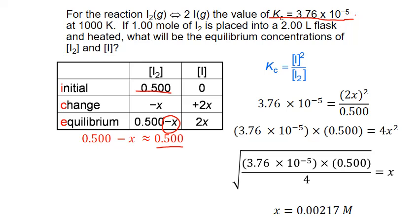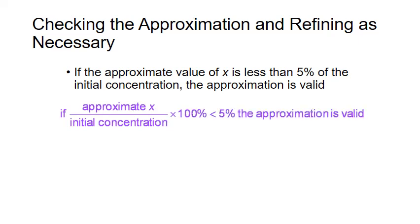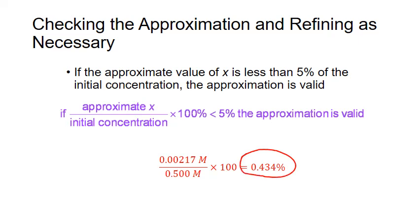When using this approximation, we must verify it was valid. The value of X must be less than 5% of the initial concentration. We check by dividing X by the initial concentration and multiplying by 100: 0.00217 divided by 0.500, times 100, gives 0.434%. This is well under 5%, confirming the approximation was valid.